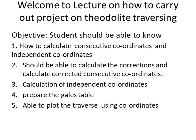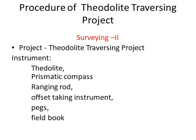Based on these objectives, we have to carry out the theodolite traversing project as part of the curriculum. We will go step by step. In order to carry out the theodolite traversing project, we require the following instruments: theodolite, independent compass, and indoor offset-taking instruments, pegs, and field book.